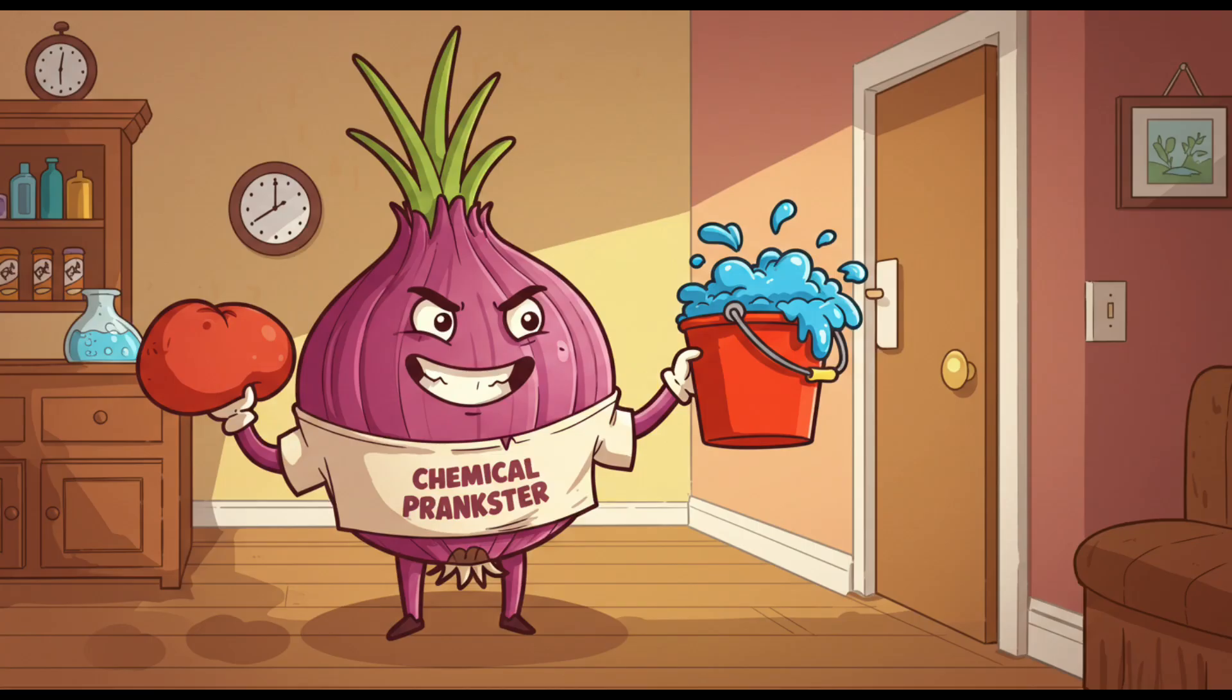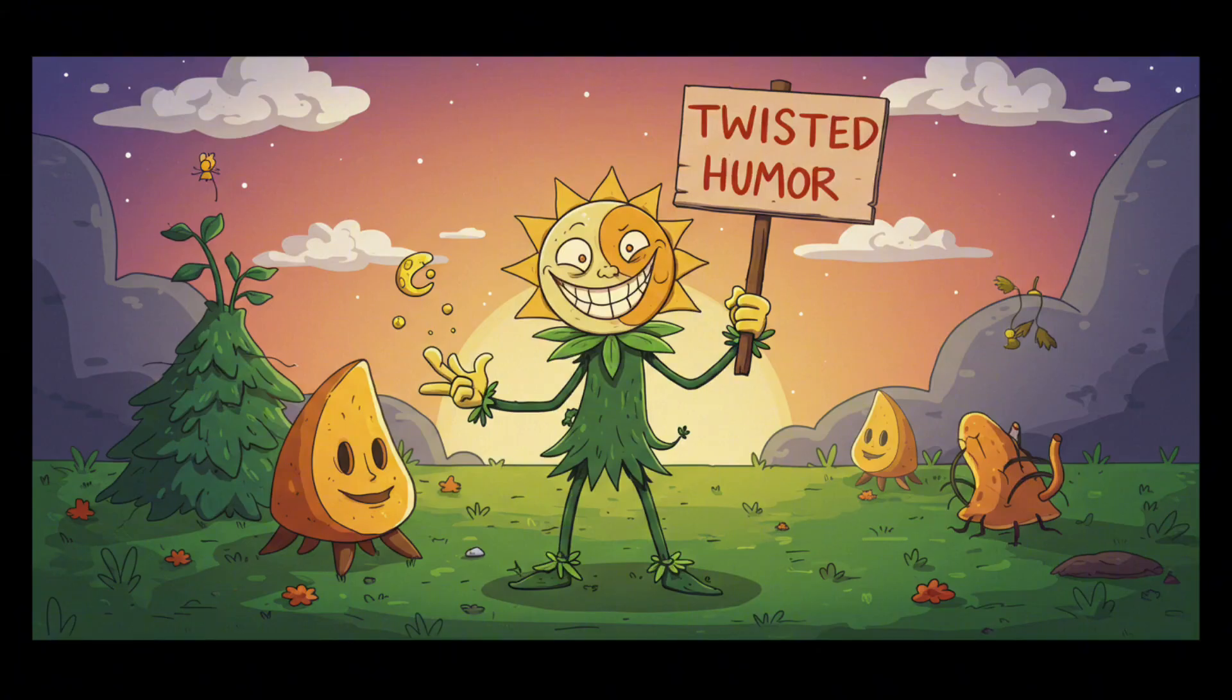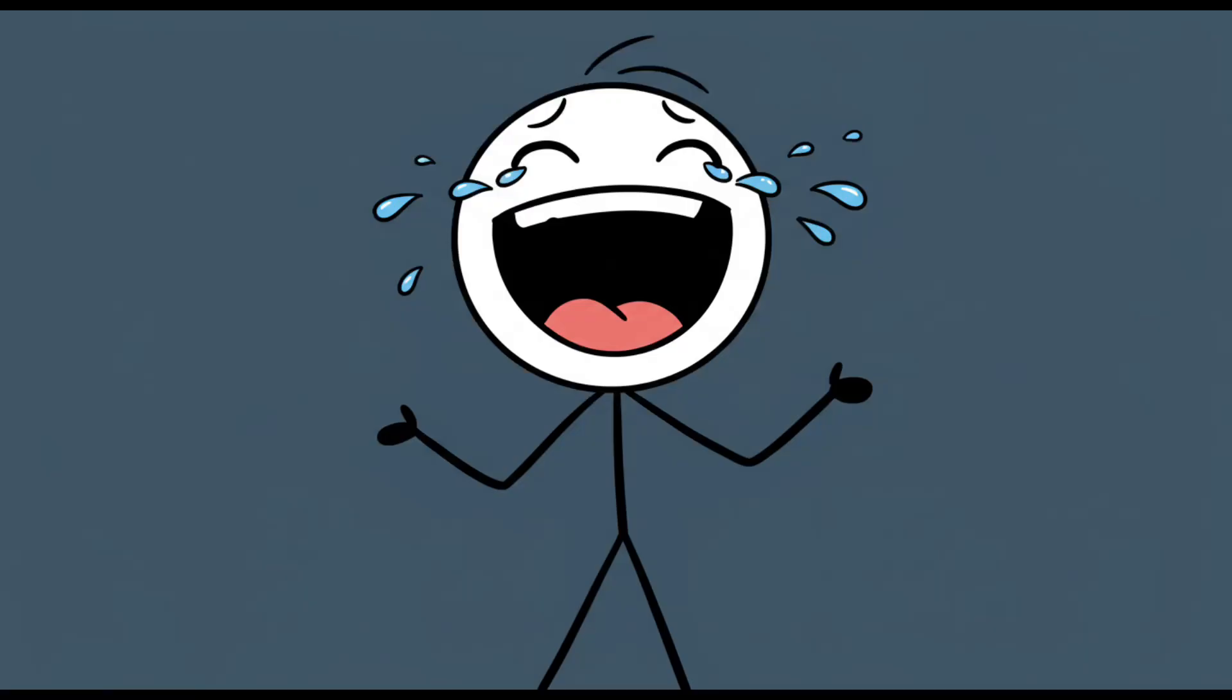So when a kid asks, 'Why do onions make us cry?' the most honest answer is, 'Because onions are chemical pranksters, and because nature has a twisted sense of humor.' Number 2: Why do we laugh?